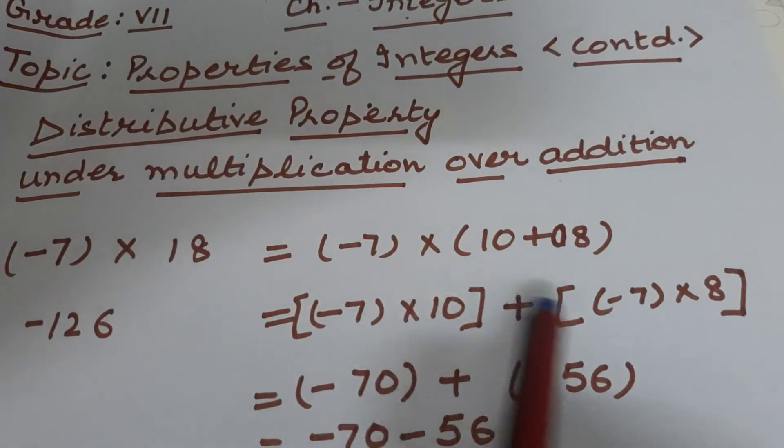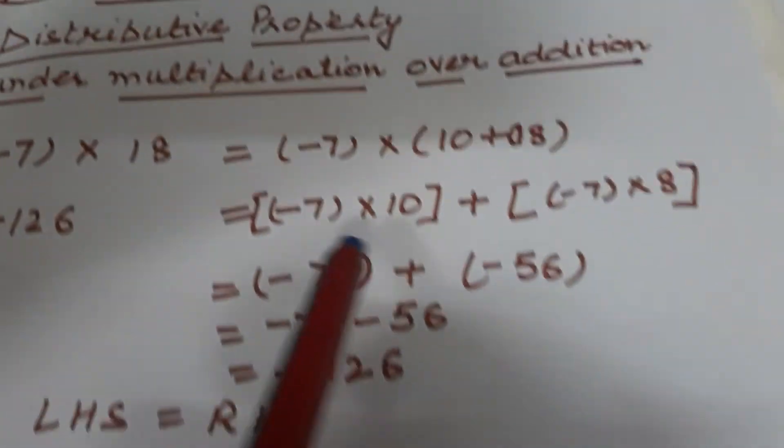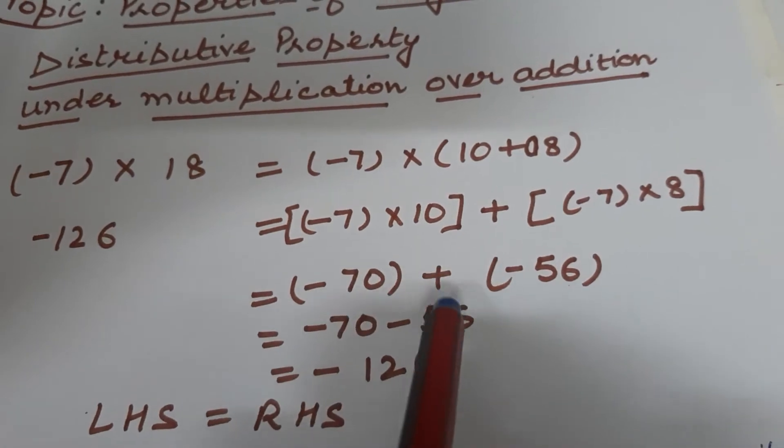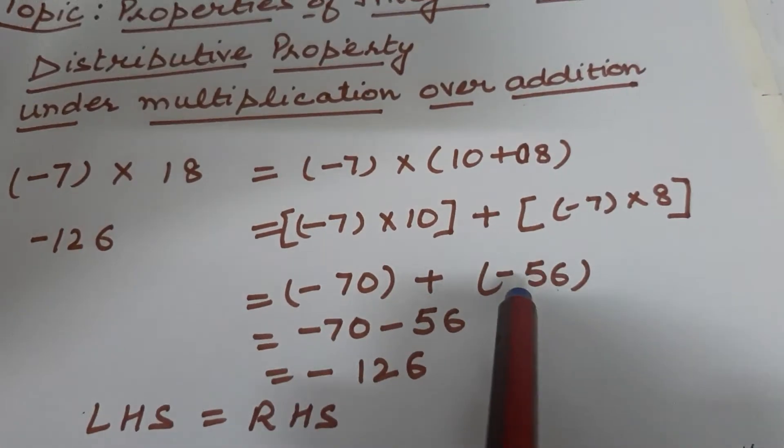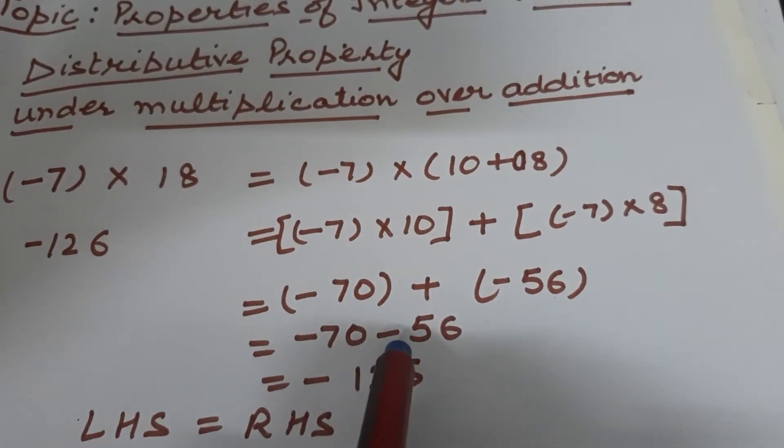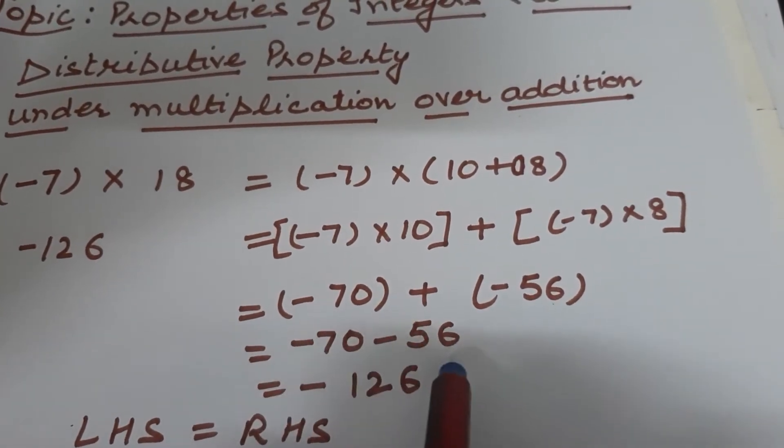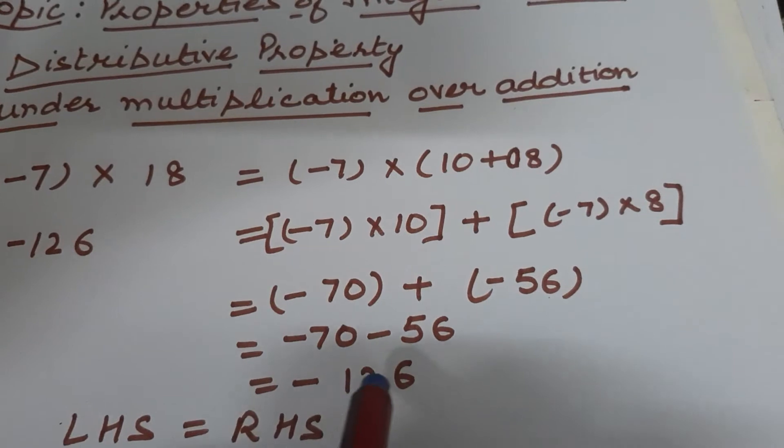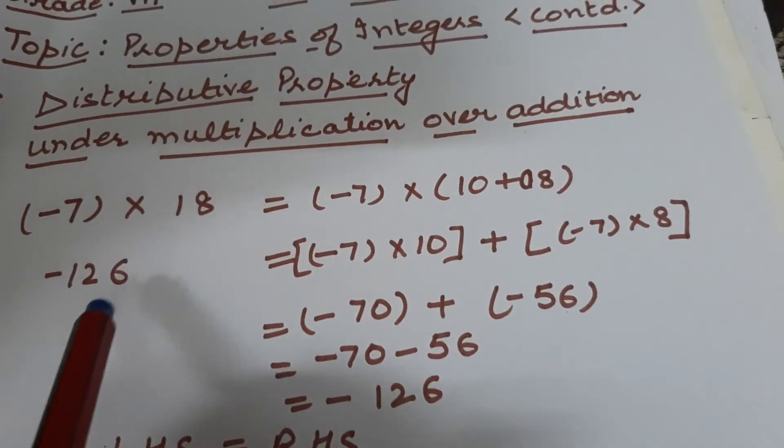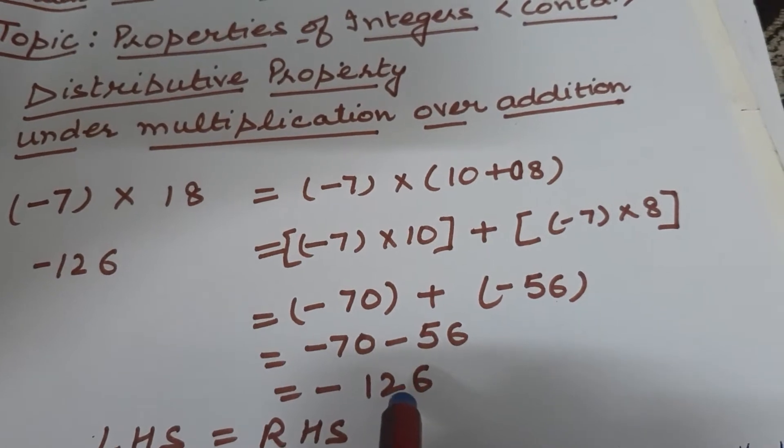Now we will solve these two brackets separately. So minus 7 into 10 is minus 70, plus minus 7 into 8 is minus 56. Plus minus is minus. So minus 70 minus 56 is minus 126. So if you see, left-hand side is equal to right-hand side.